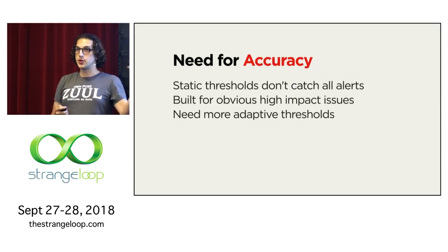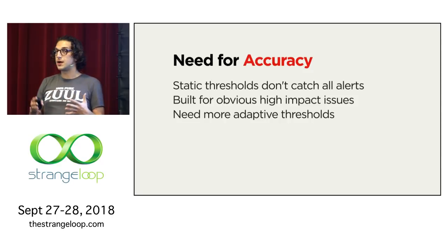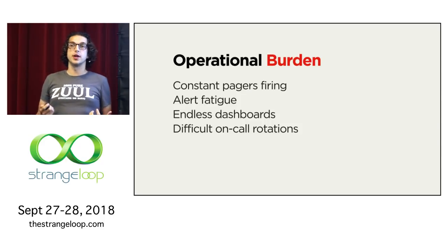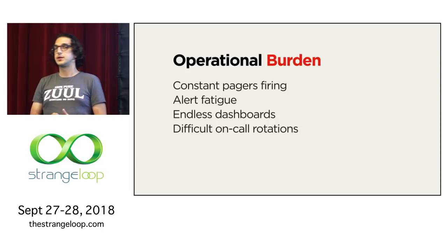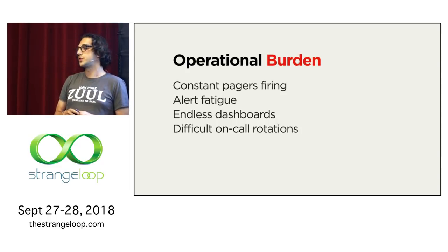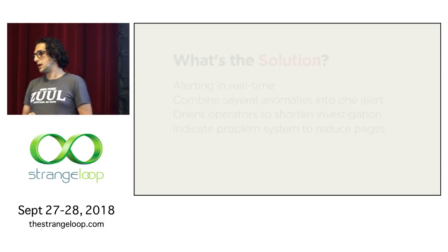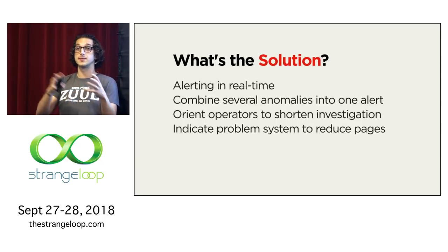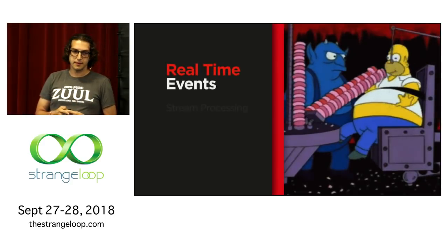We also need accuracy. Static thresholds don't necessarily catch all the anomalies — they're set for only obvious high-impact issues and may not be enough. We need more adaptive thresholds. And selfishly, we wanted to reduce our operational burden — we were constantly getting paged, which creates alert fatigue after a while. Our page load was about 10 a week and we wanted to get that down. The solution: real-time alerting, combining several anomalies into one alert so we can see which systems are the pattern and orient operators to page the exact team, not every team.